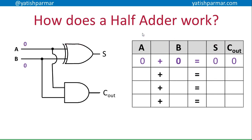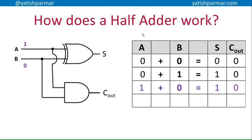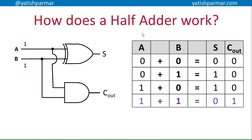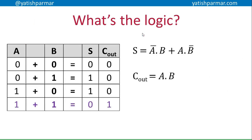If I have an input of 0,0 my output S is 0 and carry-out is 0. If I have an input of 0,1 I get an output S of 1 and carry-out 0. Similarly for 1,0. And if I have an input of 1,1 then S - because it's XOR (exclusive OR) - gives me 0, but carry-out is 1 because 1 AND 1 gives 1. You can see how a half adder takes two input bits and gives you a sum and a carry.